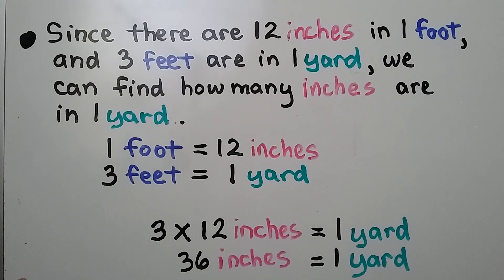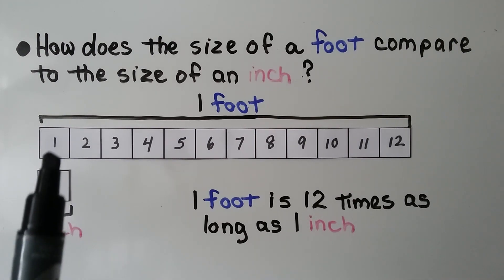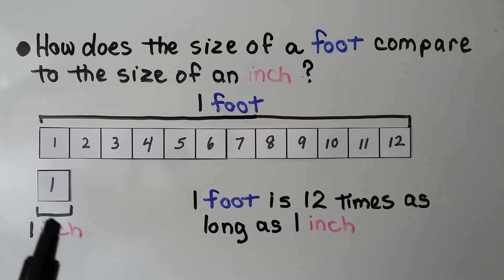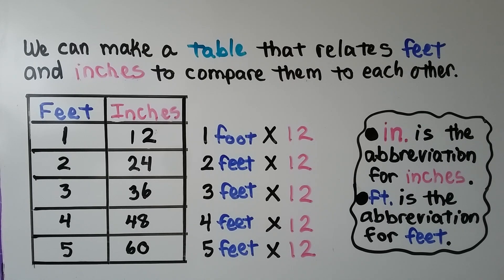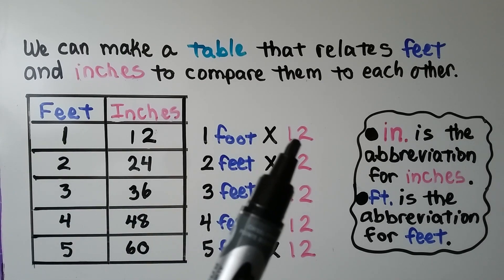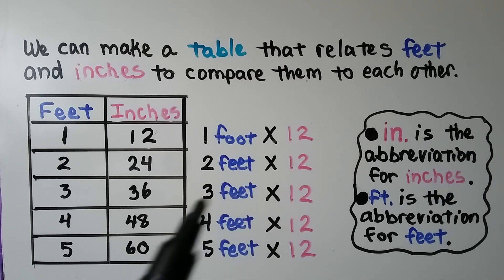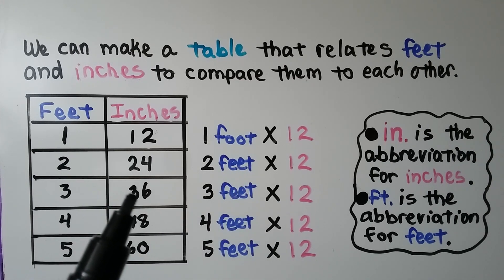36 inches is equal to one yard. How does the size of a foot compare to the size of an inch? Each square is one inch in size; we have 12 of them, which equals one foot. One foot is 12 times as long as one inch. We can make a table: one foot is 12 inches, two feet is 24 inches, three feet is 36 inches, and so on. 'in.' is the abbreviation for inches and 'ft.' is the abbreviation for feet.